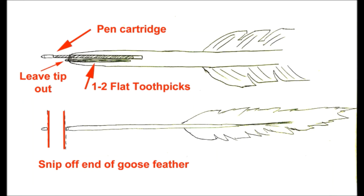To take up that slack and make it a more firm fit, take one to two flat toothpicks and shove them right in underneath where you've put the cartridge to fill up that gap. It usually takes one or two to cradle the pen cartridge. Leave a little bit of the tip of each toothpick outside of the feather.